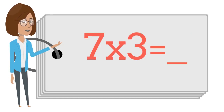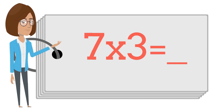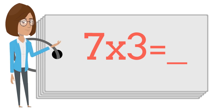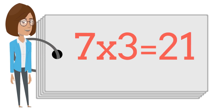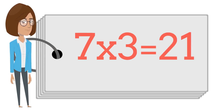Seven times two is fourteen. Seven times three is — say the answer out loud. Seven times three is twenty-one.